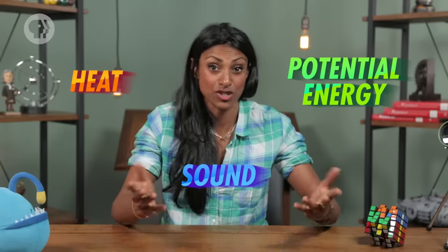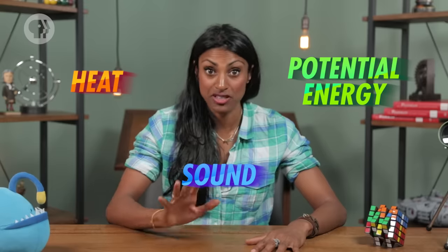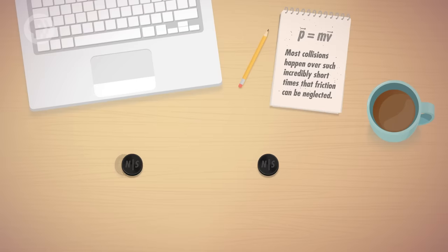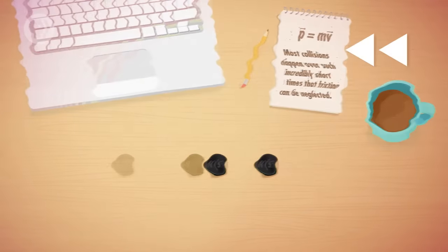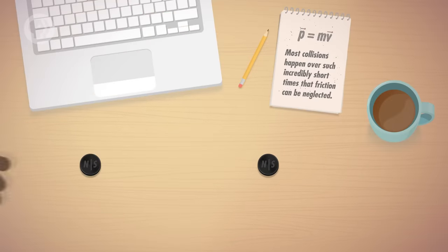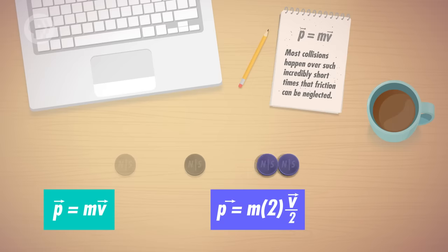These collisions lose as much kinetic energy as possible to other forms of energy, like heat, or sound, or even potential energy. But still, their momentum is conserved. An example would be if you pushed one magnet towards another at just the right angle for them to stick together on contact. And then they both started sliding together at half the speed of the magnet you pushed. Before the collision, the momentum of one magnet was zero, and the momentum of the one you pushed was its mass times velocity. Once the magnets collide, the mass is doubled and the velocity is cut in half. So the total momentum stays the same, but you lose some kinetic energy because there's less speed involved.